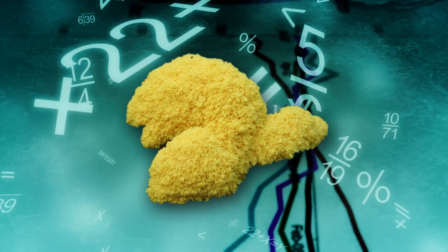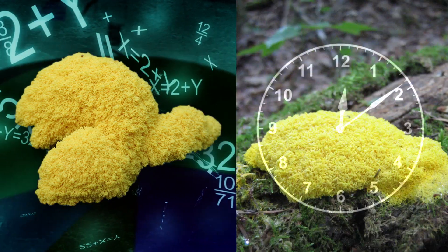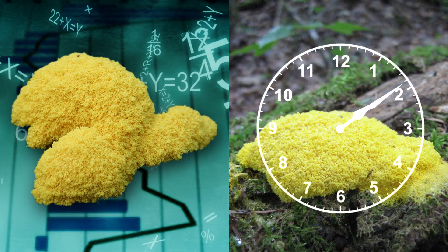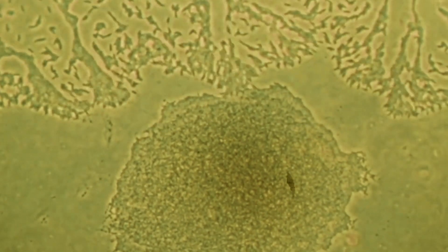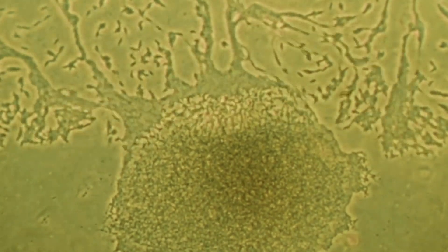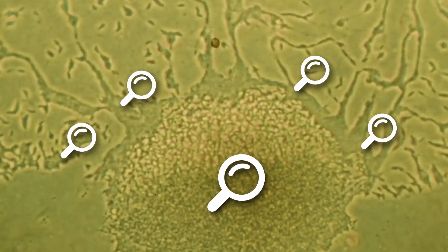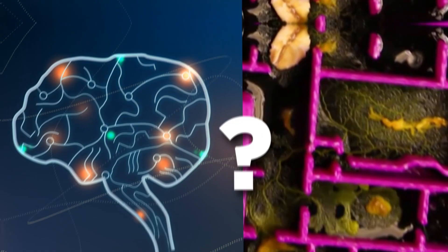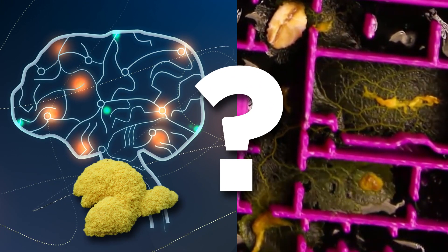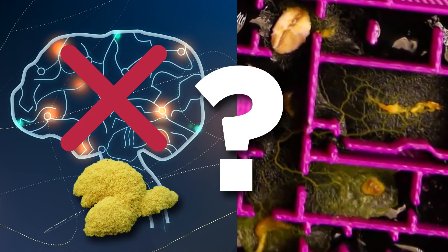This not only suggests that slime mold is able to learn, but also that it is able to sense the passing of time, and even more incredible, it is also able to pass this habituated learning habit onto new cells that join the blob. But how can such a primal organism with no brain possess such complex intelligence? Well, scientists aren't quite sure yet.